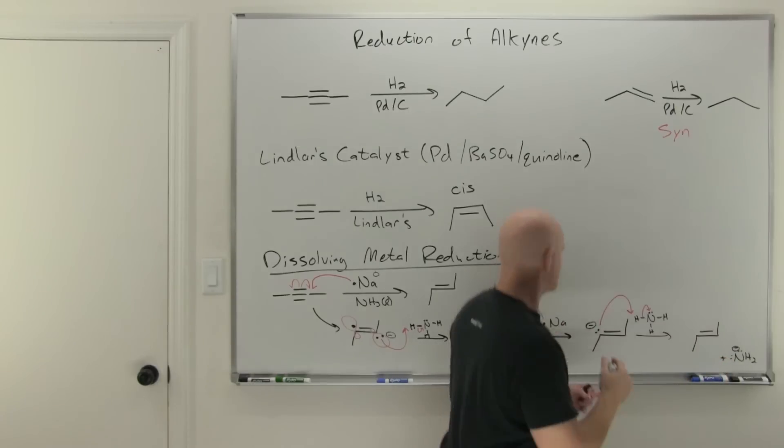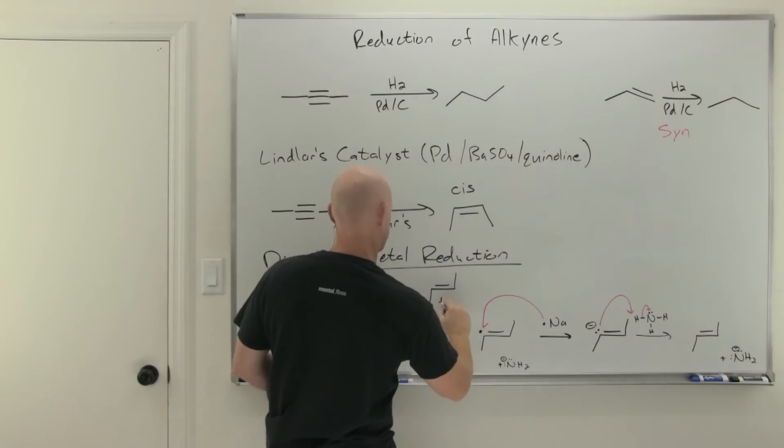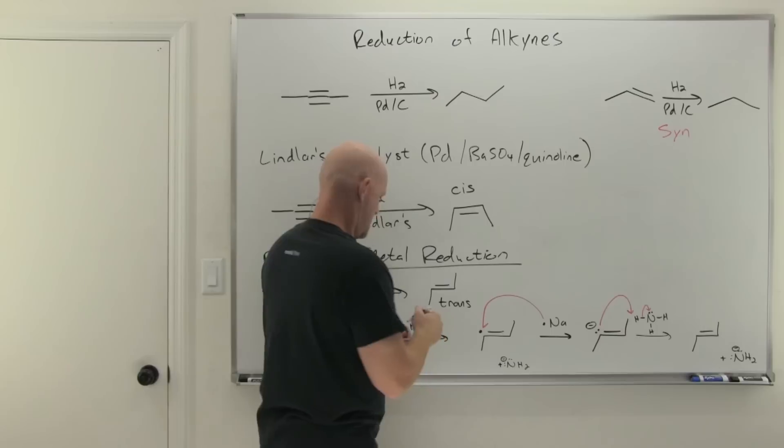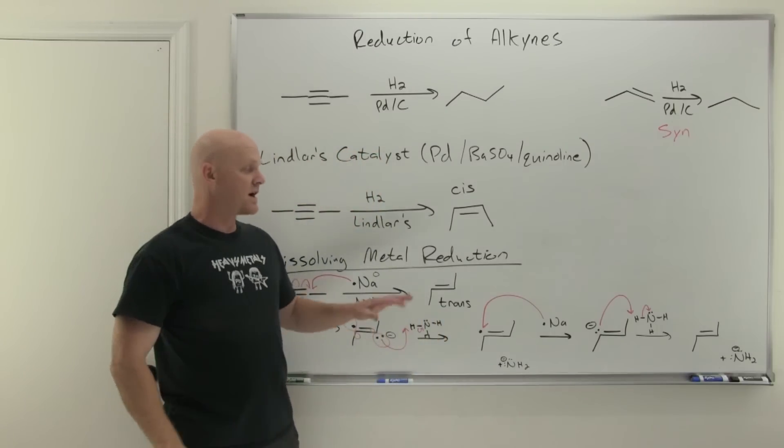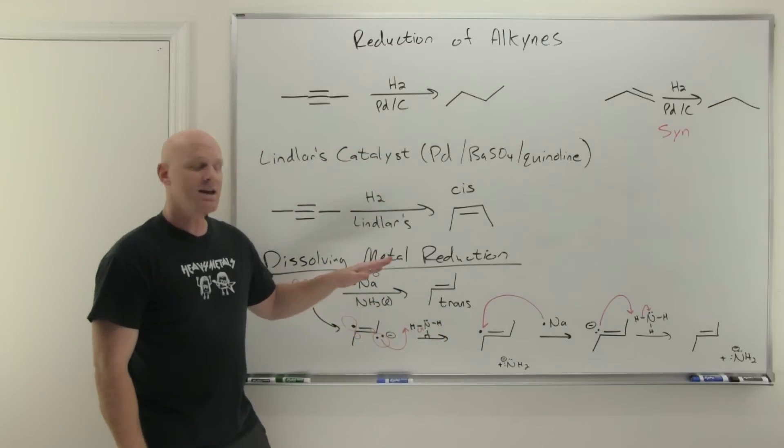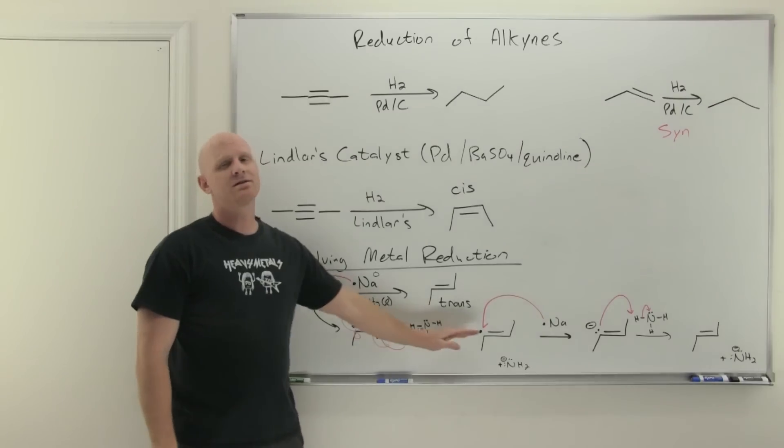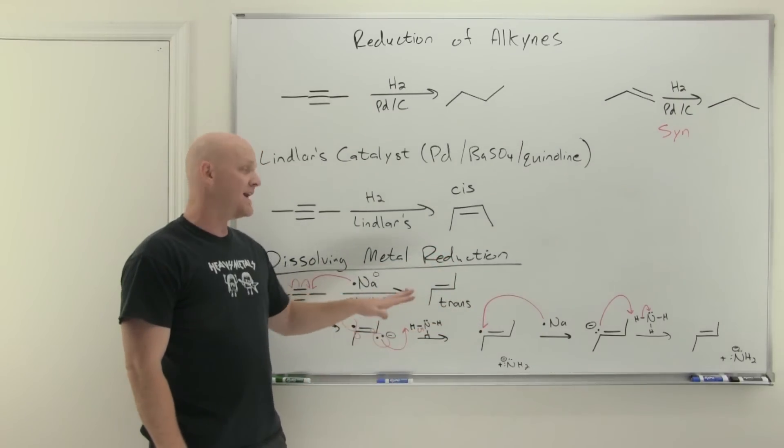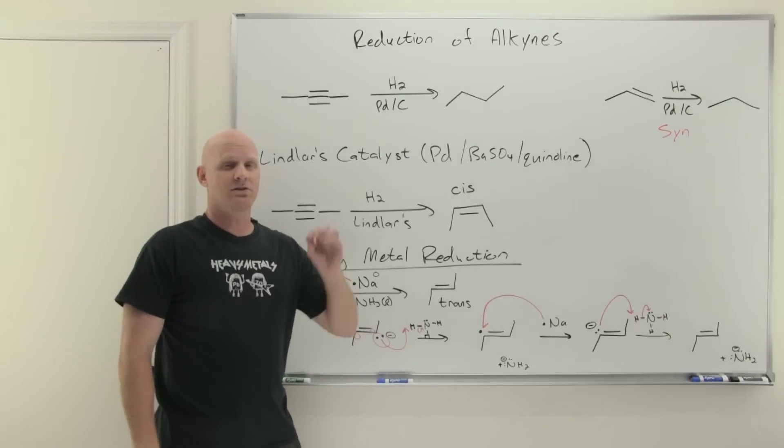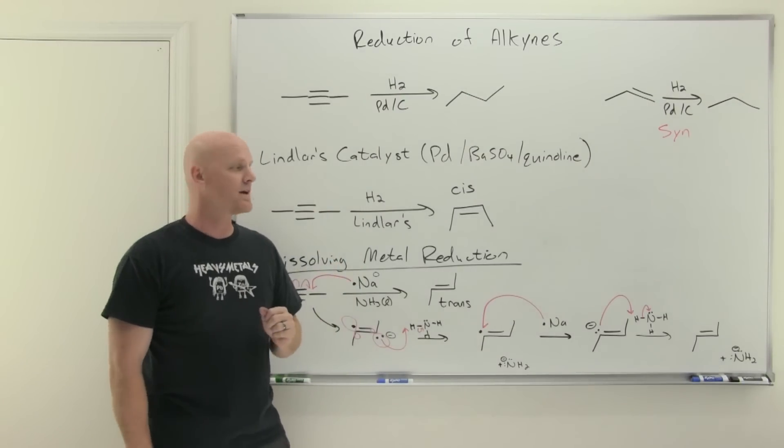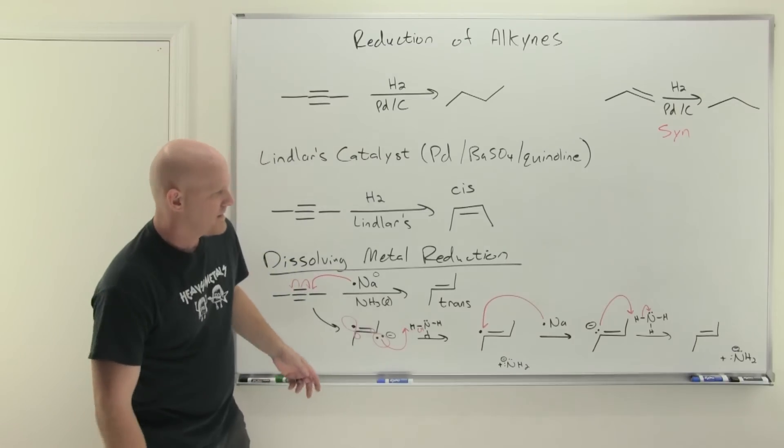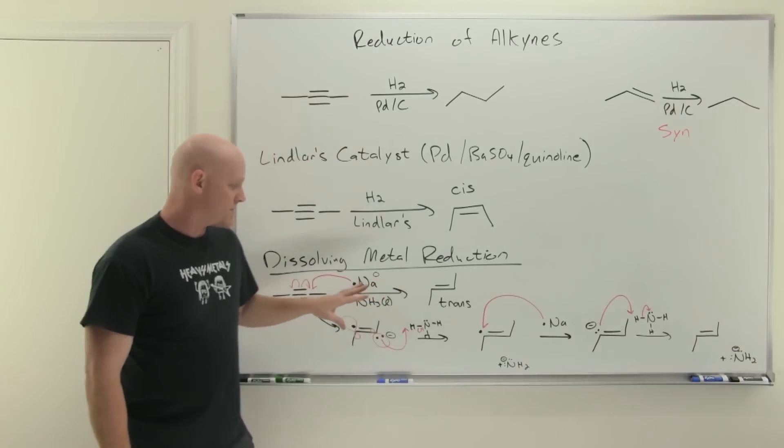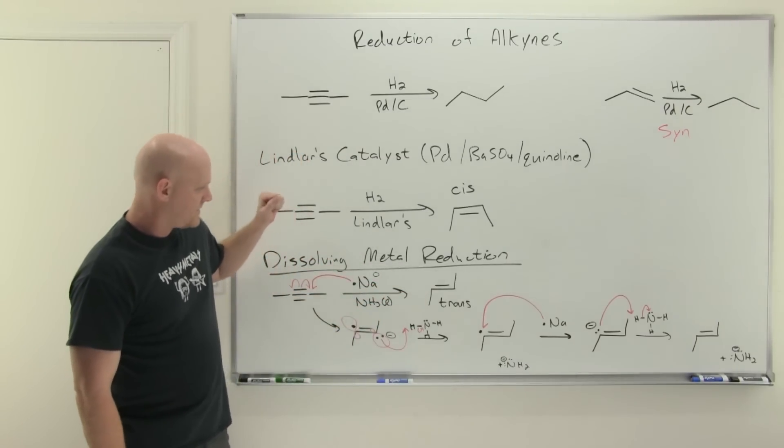There's our final product, the trans alkene. Like I said, most of you are probably not going to be on the hook for this mechanism. Even for those of you that this mechanism is presented in your course, it's probably the least likely mechanism to show up on your exam out of any in this chapter. Does that mean it has a zero percent chance of showing up on your exam? Well, not zero, but it's just the least likely.